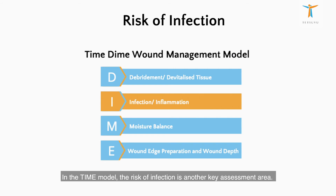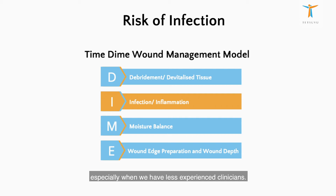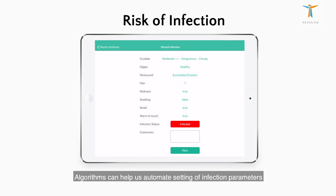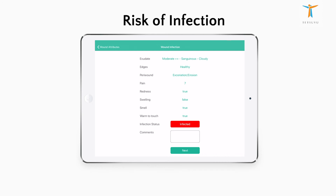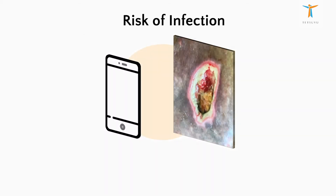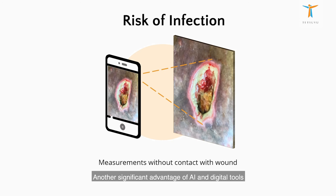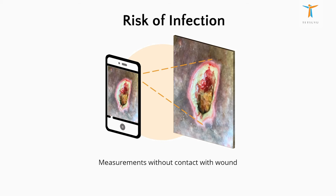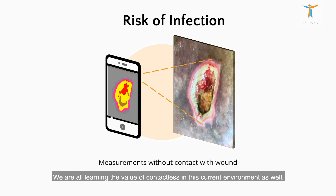Risk of infection. In the TIME model, the risk of infection is a key assessment area. This sometimes gets missed out in the manual process, especially when we have less experienced clinicians. Algorithms can help us automate setting of infection parameters to alert us if there are indeed risks of infection. Clinicians should be able to value-add based on their experience and judgment and, if necessary, override this outcome but record their comments. Another significant advantage of AI and digital tools is the ability to have reduced physical contact with the wound. We are all learning the value of contactless in this current environment as well.